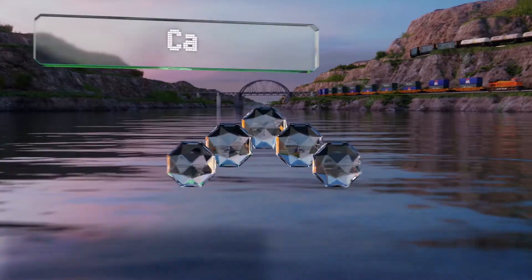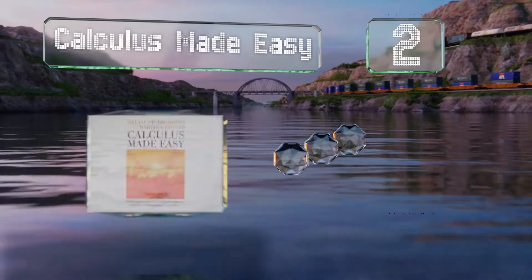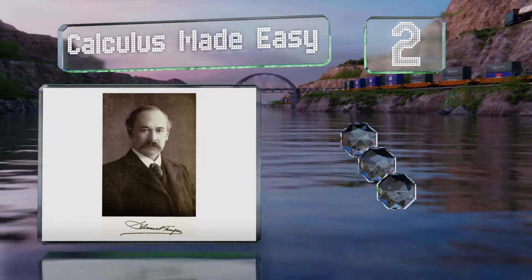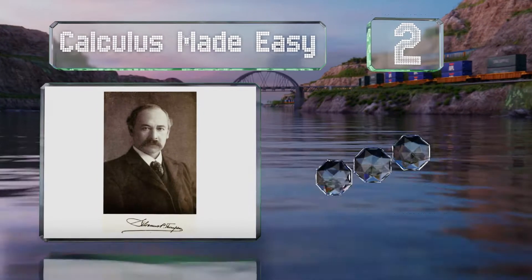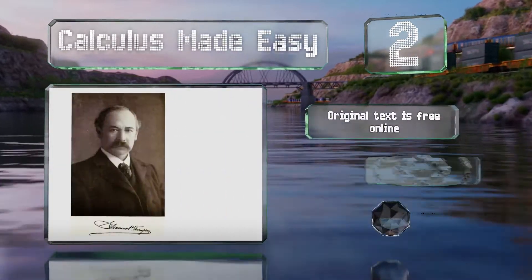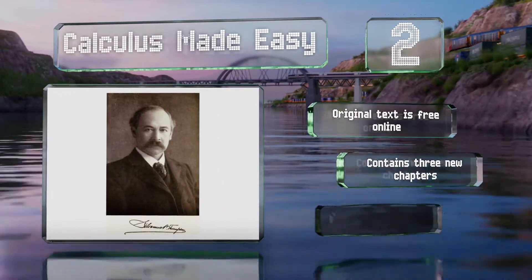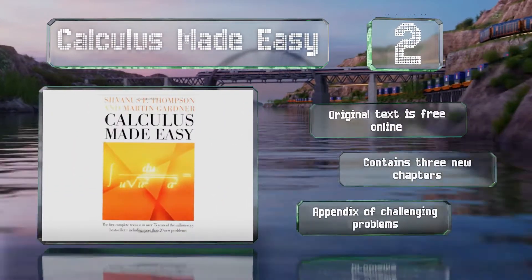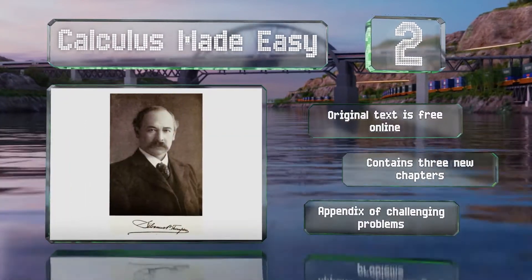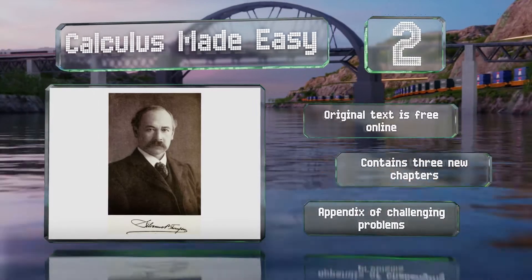At number 2, originally published in 1910, Calculus Made Easy is considered a classic and serves as an elegant introduction to the subject. This edition has been updated and revised to include modern language and methods so readers can learn the fundamentals. It includes an appendix of challenging problems and contains three new chapters. The original text is available for free online.